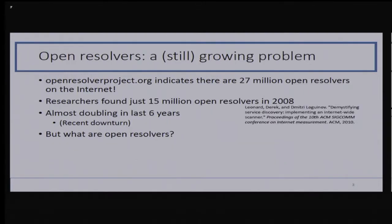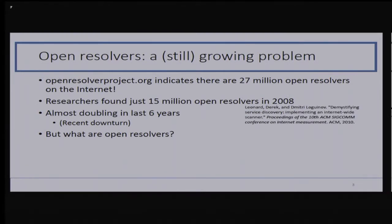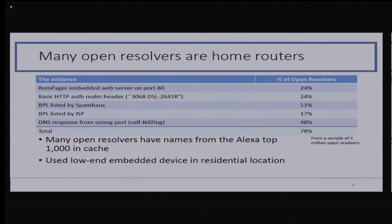Therefore, my security group decided to look at a different problem: open resolvers. We've all known these things are an issue, but the open resolver project is still showing there are 27 million of them on the internet today — almost double what researchers found back in 2008. Recently, the open resolver project has shown a decline, which we hope continues. But in the meantime, we'd like to answer the question: just what are open resolvers? We came to the conclusion that open resolvers are home routers, and it seems other people have come to the same conclusion independently.